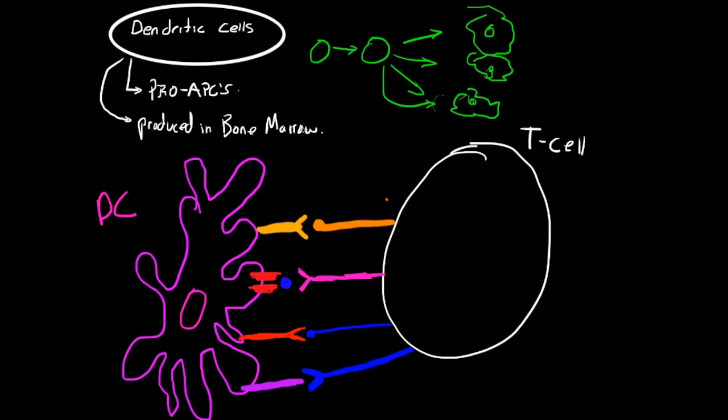They are the most potent professional antigen presenting cells. Unlike macrophages and B cells, dendritic cells do not have to be activated to function as an antigen presenting cell, which is very important. They are very good at presenting antigen. They do not need activation.